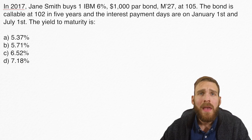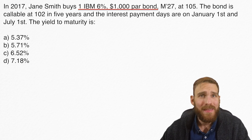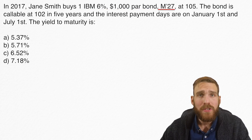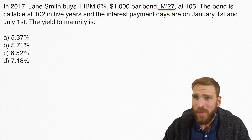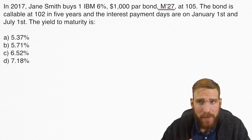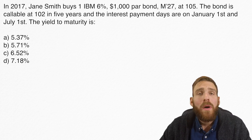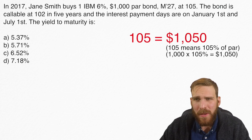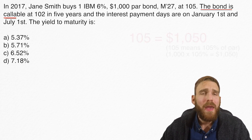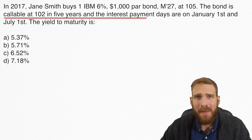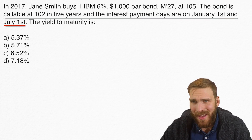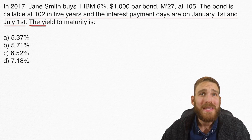In 2017, Jane Smith buys one IBM 6% $1,000 par bond. It matures in 2027 — that's what the M stands for, maturity. At 105, another way of saying $1,050 in bond terms. The bond is callable at 102 in 5 years and it pays interest on January 1st and July 1st. The question is: what is the yield to maturity?